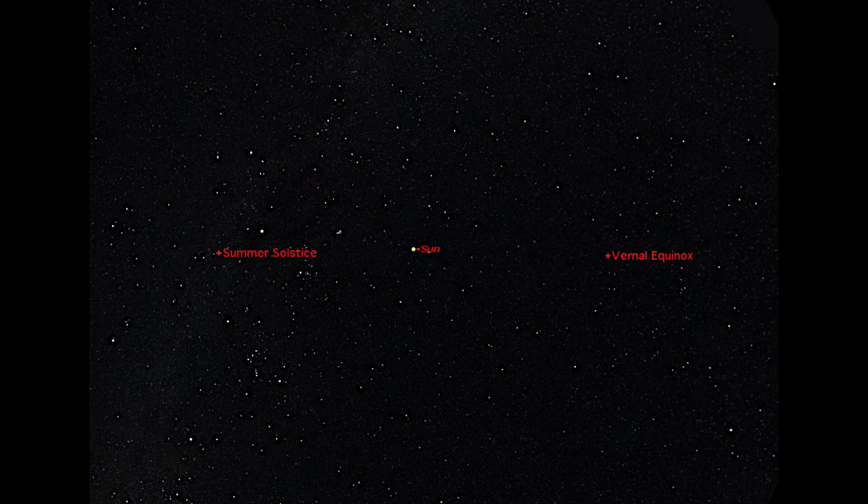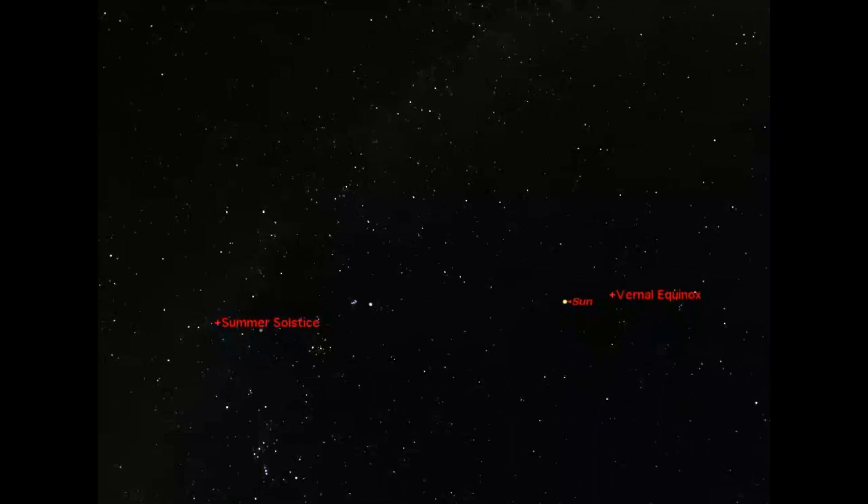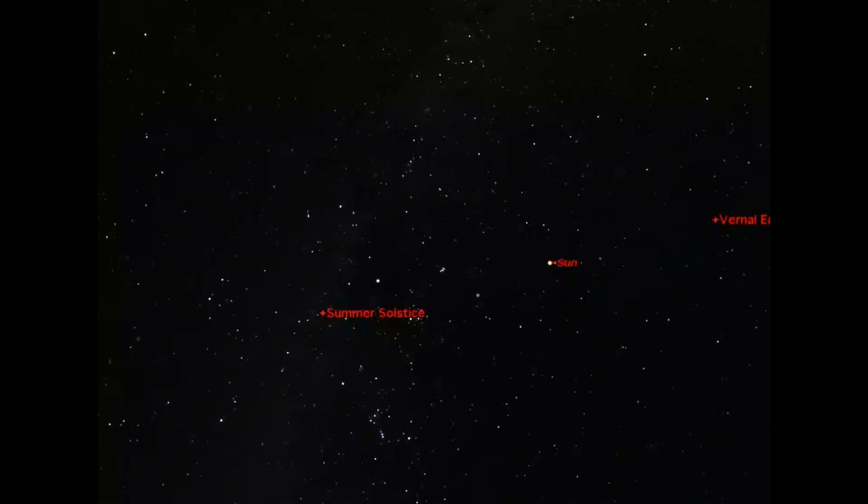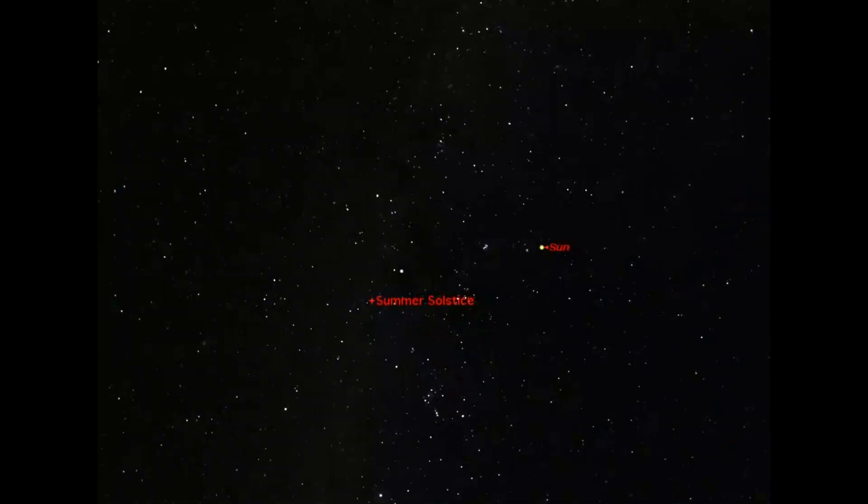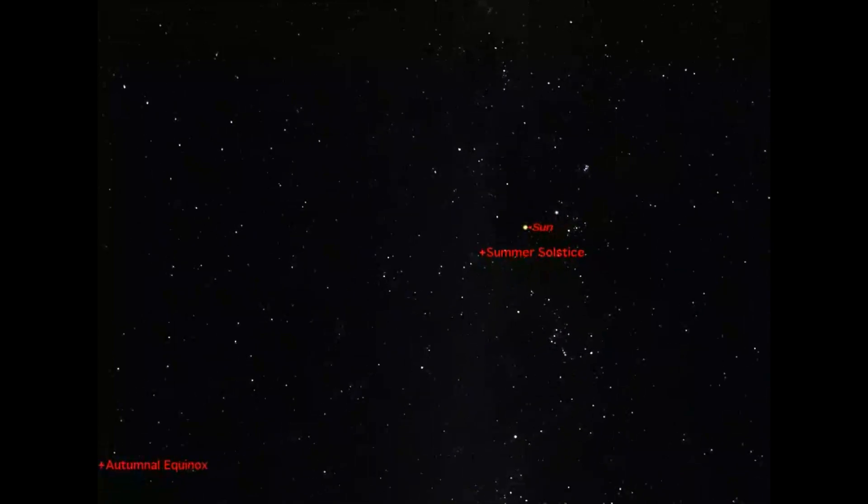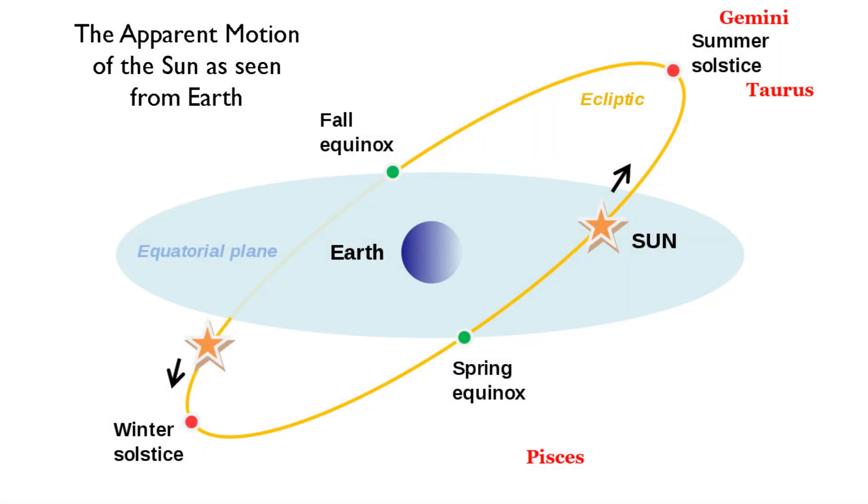In astronomy, the solstices and equinoxes mark the times when the Earth reaches certain milestones in its orbit around the Sun. On the vernal equinox, we would see the Sun in the constellation Pisces if we could see the stars during the day. By the summer solstice, it would have moved to the border of Taurus and Gemini. The Sun appears to move because our perspective changes as the Earth orbits, and it appears to move against the background stars.